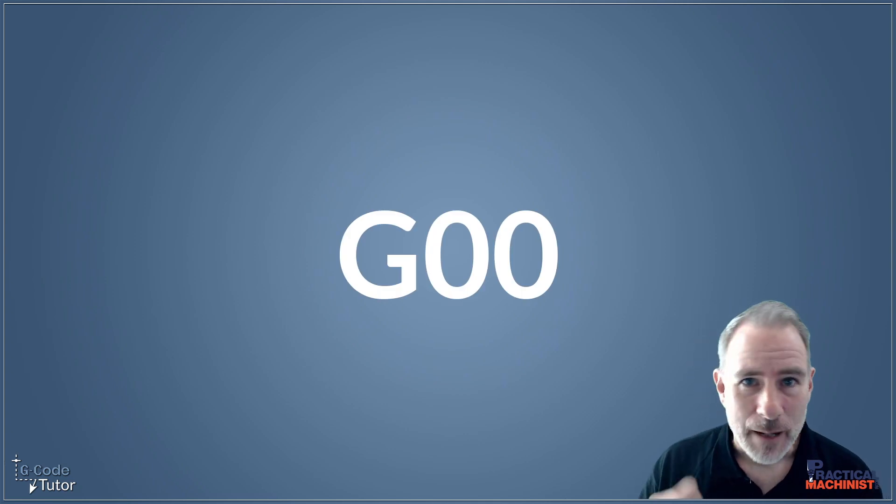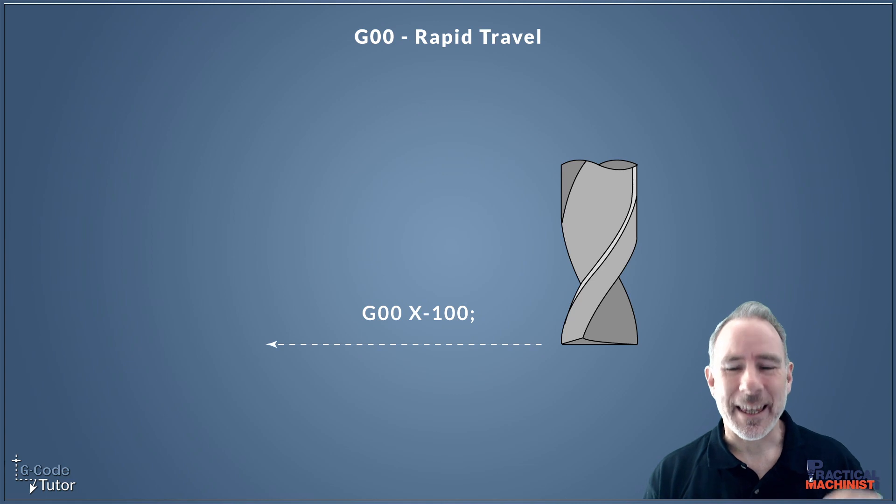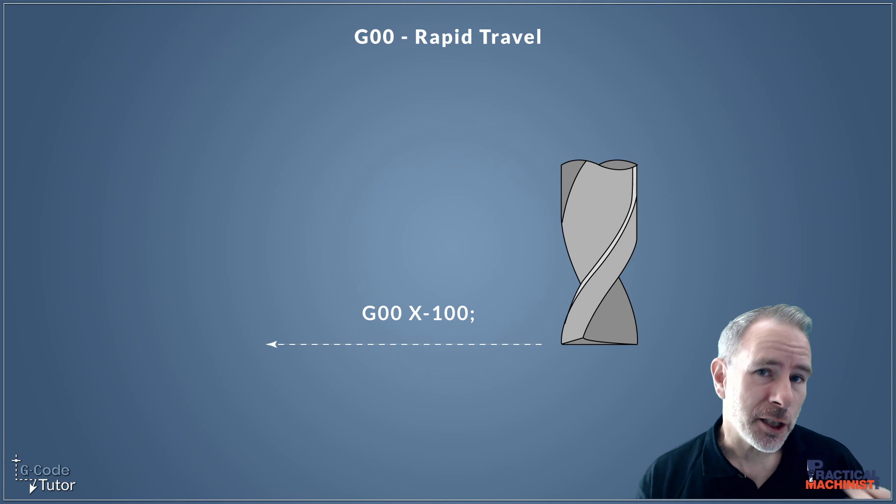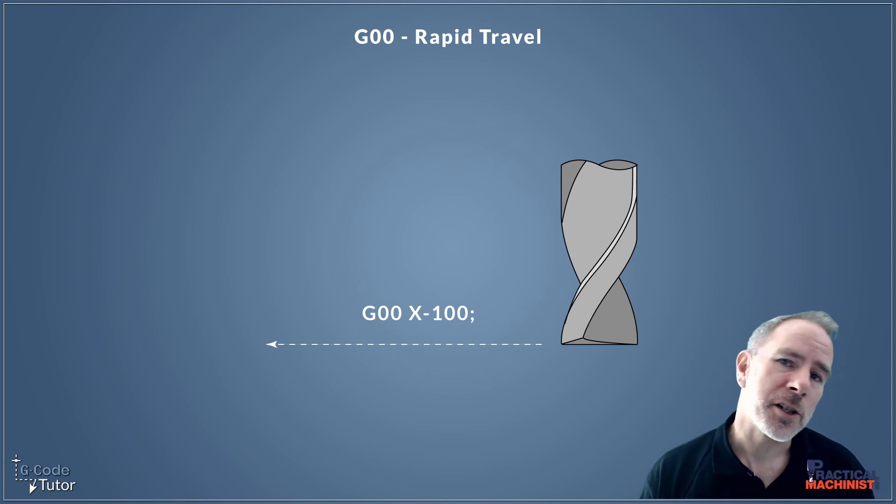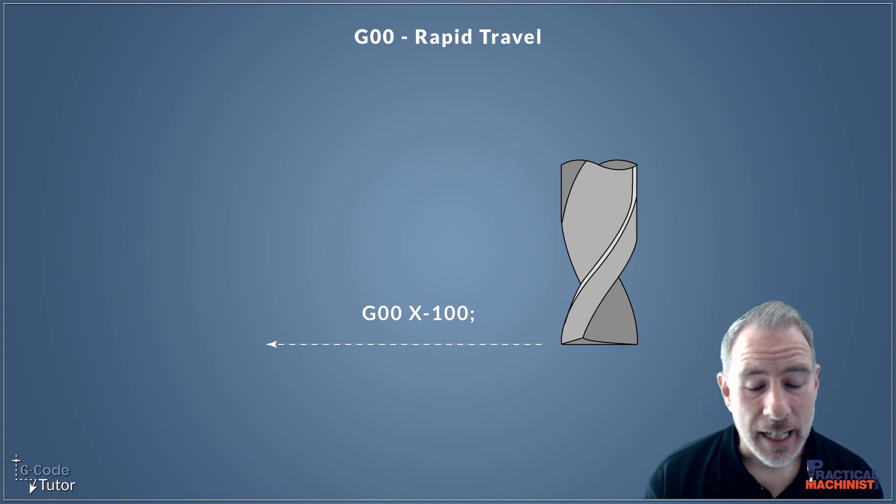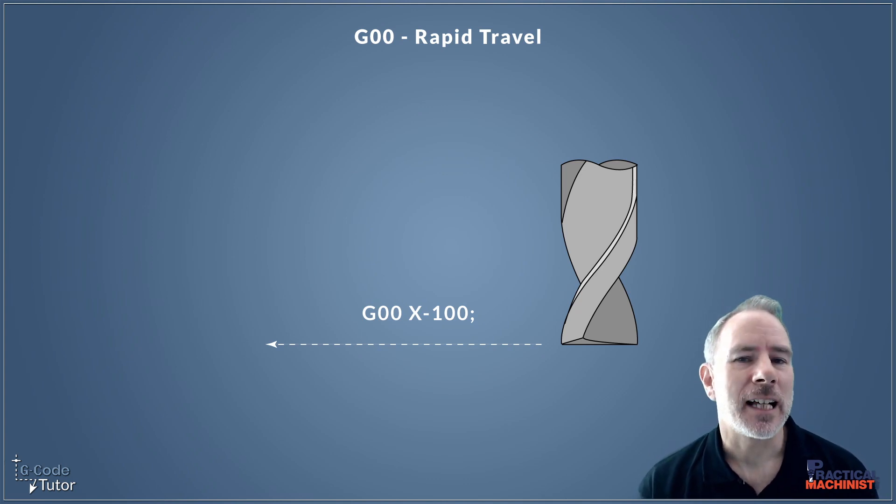So the first G-code I want to talk about is G00, our rapid travel command. One of the most basic G-codes and also the one we use the most. G00 moves our tool at the fastest speed the machine will allow from point A to point B, and we can do this in as many axes at the same time as we wish. We can move in X minus 100 millimeters and it would produce a toolpath in a direct straight line to that position as fast as the parameters set in the machine will allow.